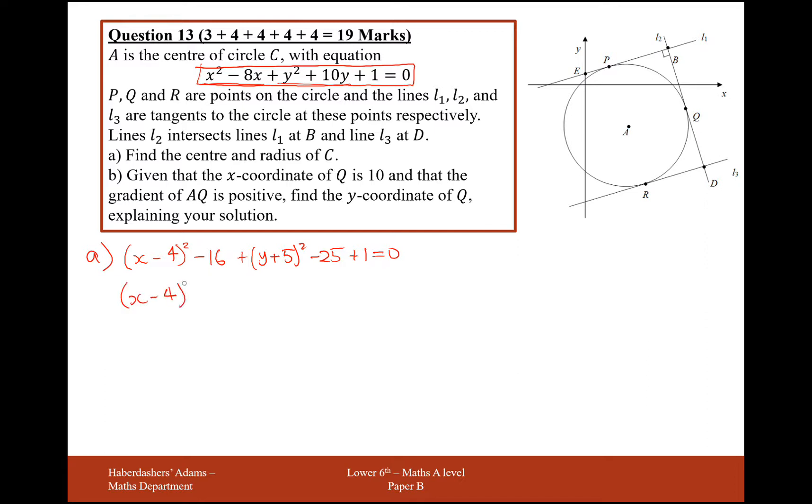Plus y plus 5 squared from halving the 10, and it'll be take away 25. And then add on the 1, and we get a 0. And then what I'll need to do is take all of my numbers over to the other side. I get x minus 4 squared plus y plus 5 squared equals 40. So from here, and comparing this to the standard equation of a circle, if my center is AB and my radius is R, then my center here is going to be 4, minus 5, and the radius is square root of 40, which is 2 root 10.